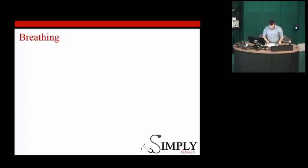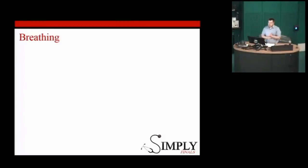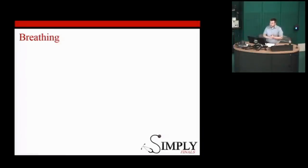Moving on to breathing. How do we assess breathing? Respiratory rate — normal in an adult is 12 to 20, depending on who you ask. Oxygen saturations — we're aiming for above 94% generally. Work of breathing: are they sitting there comfortably, or are they using all their accessory muscles, shoulders going, nostrils flaring, taking huge deep breaths? That gives you a sense of how much effort they're putting in.